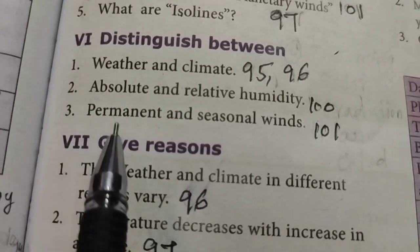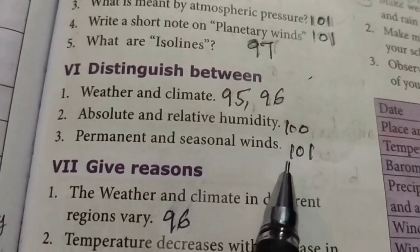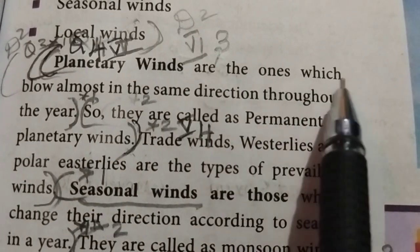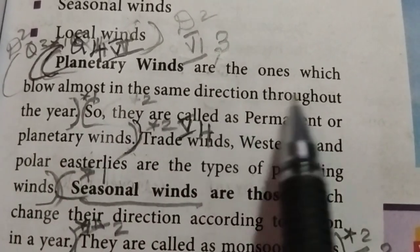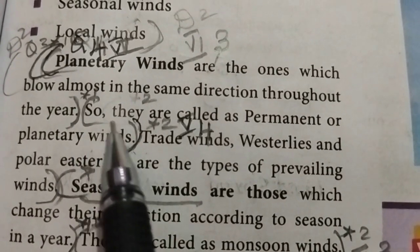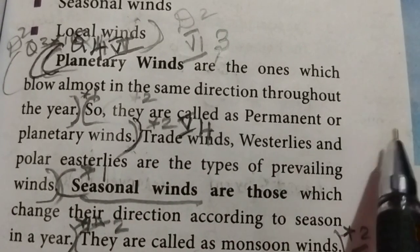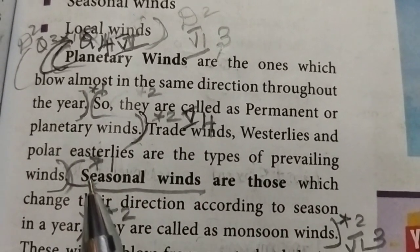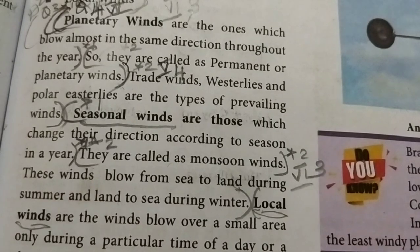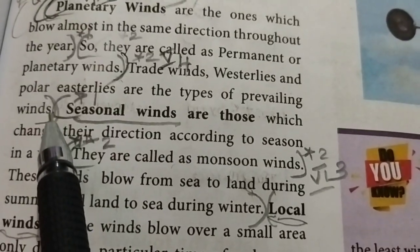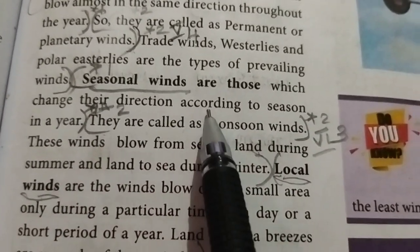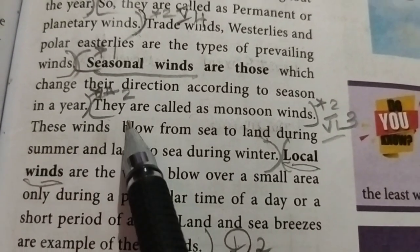Number 3: Permanent and seasonal winds. Take page 101. Planetary winds are those which blow almost in the same direction throughout the year, so they are called permanent or planetary winds.